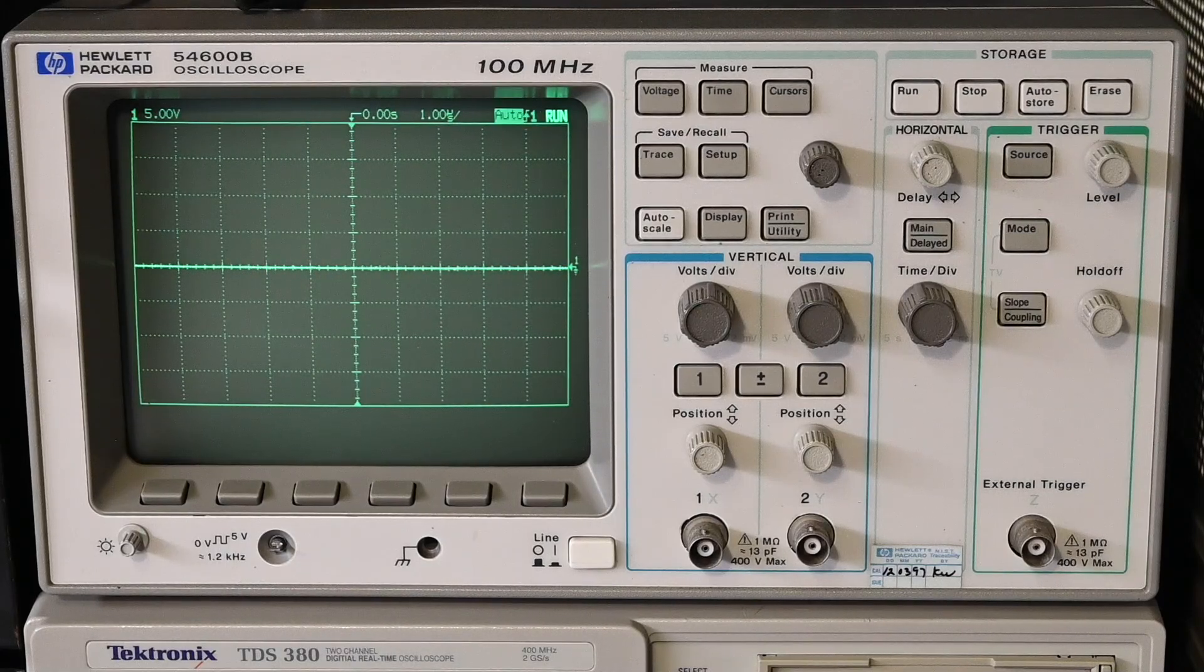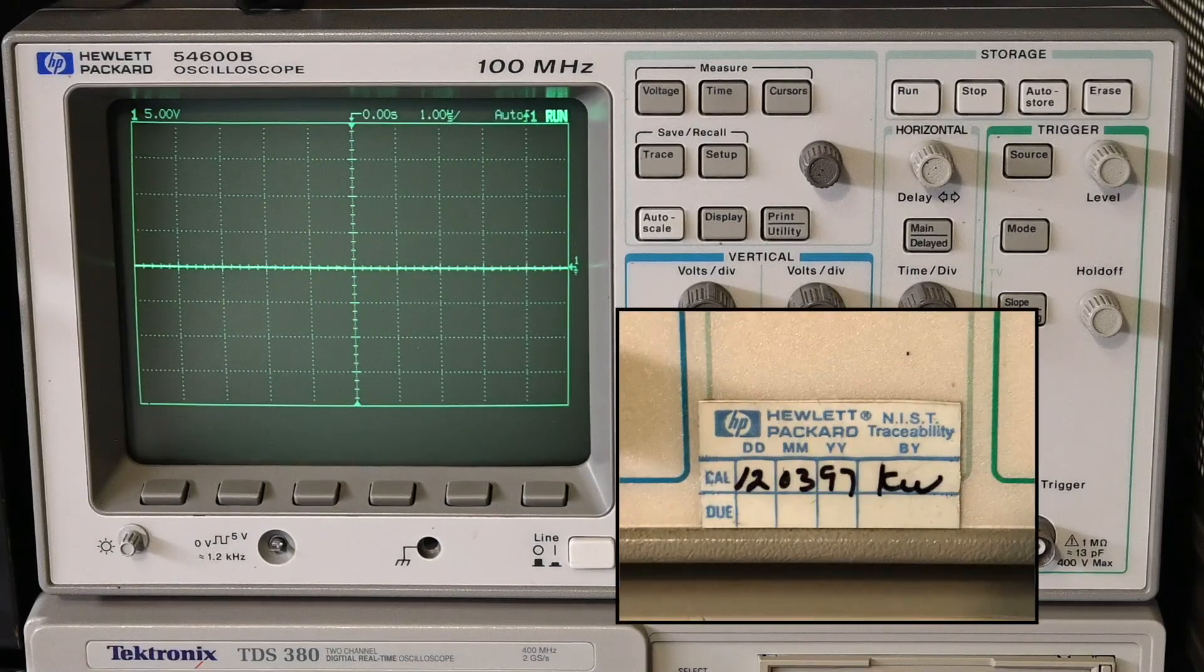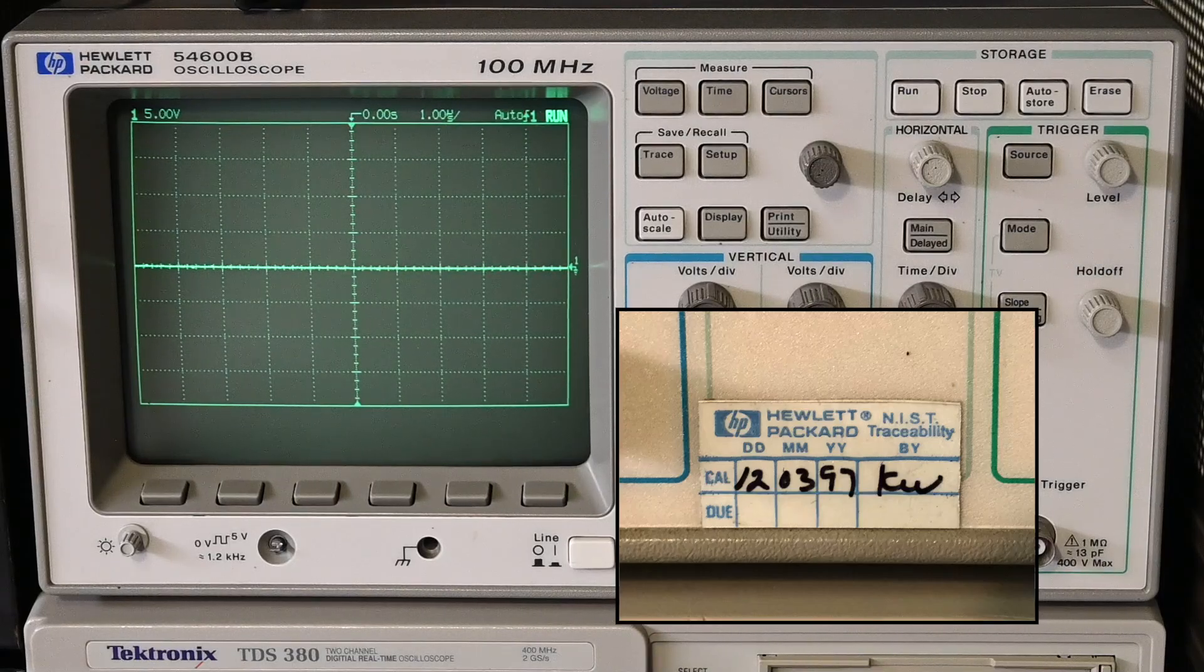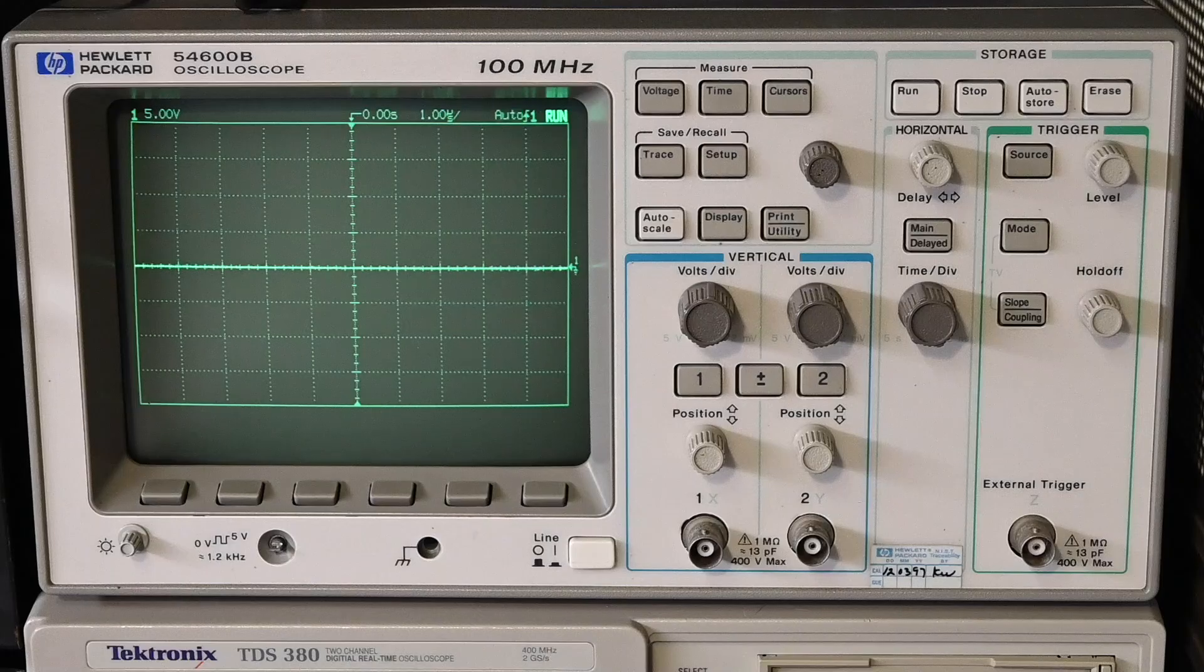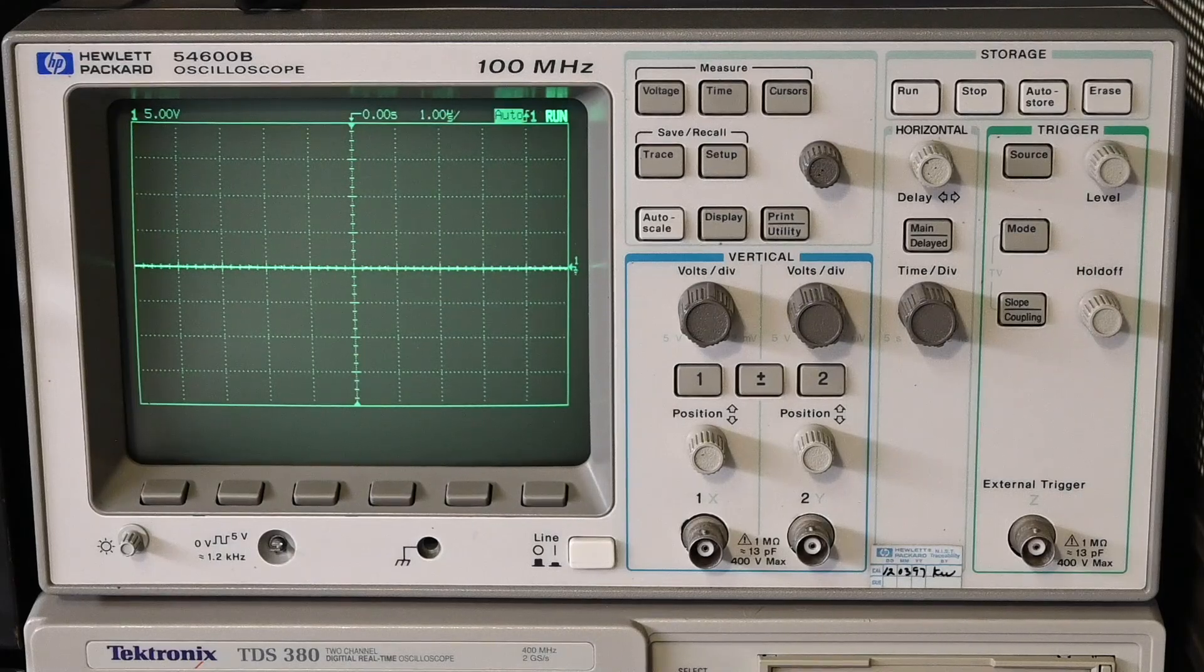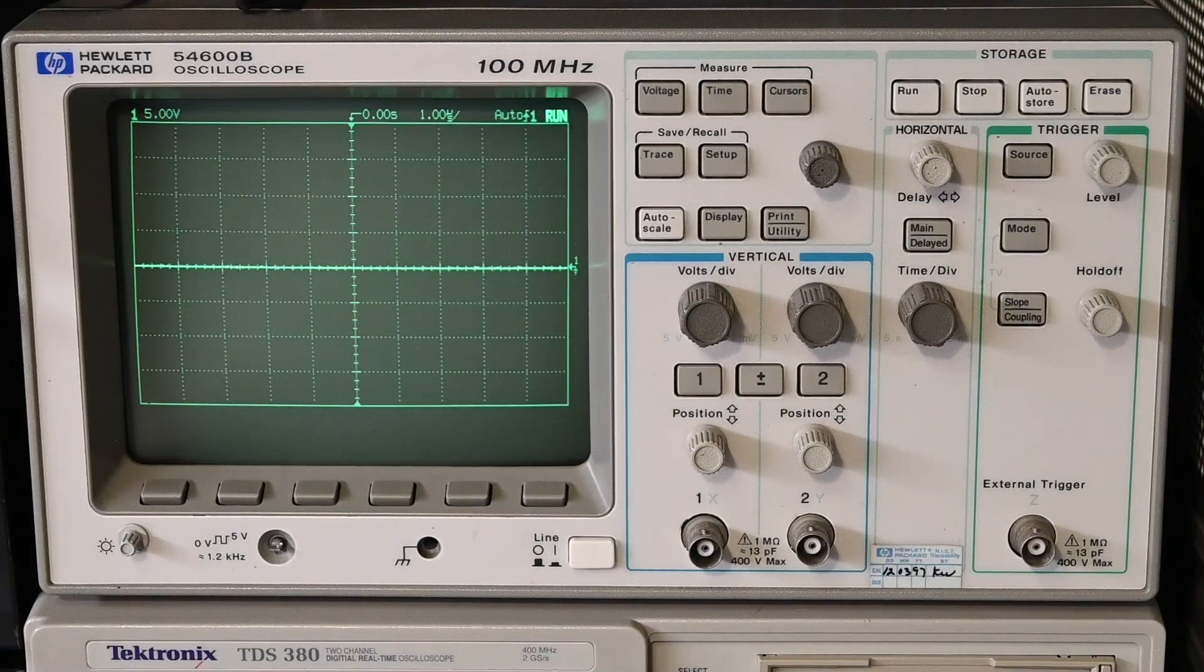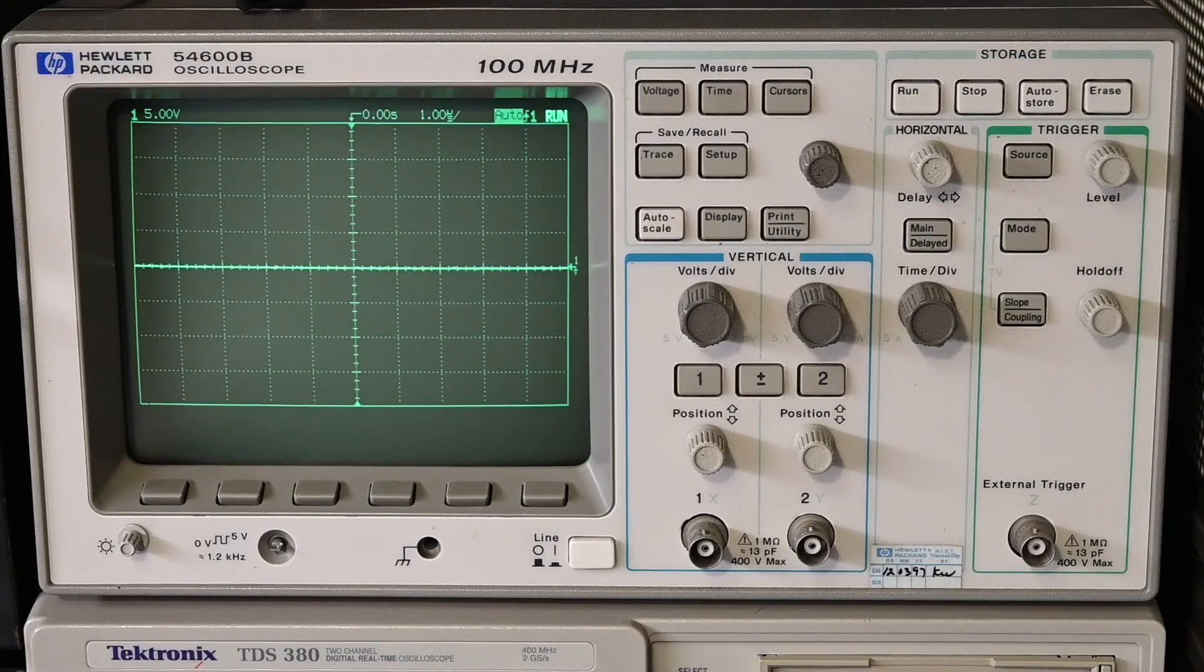This particular scope has a calibration sticker on the front panel dated from 1997. It's a NIST traceable calibration that Hewlett-Packard made on this scope. I don't know if the oscilloscope left the factory with that calibration, or if it was returned back to Hewlett-Packard after it was purchased to be recalibrated. In 2025, as I'm making this video, this oscilloscope is pushing nearly 30 years old. But it works very well, and I purchased this as used surplus in the early 2000s, and it's worked flawlessly all the years that I've owned it. I've put a lot of time on this scope, and it's never needed any servicing or any maintenance whatsoever.